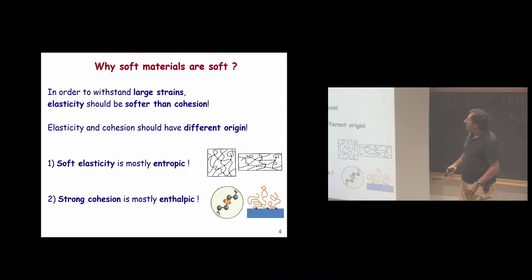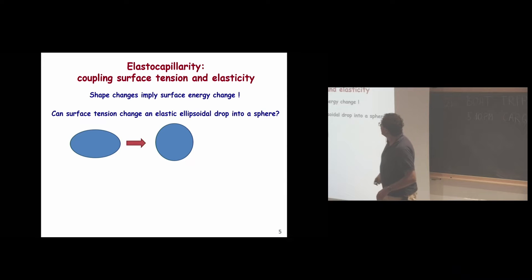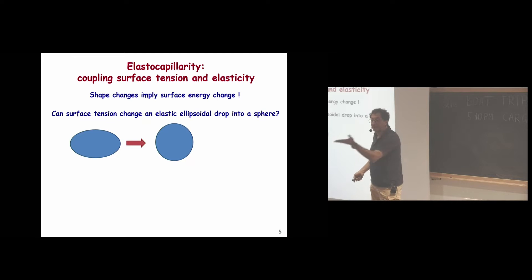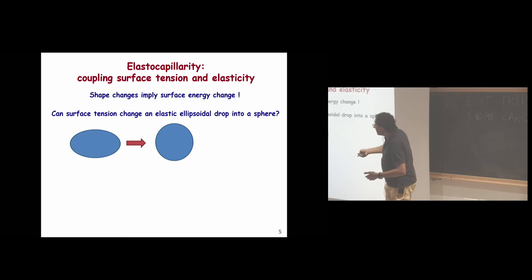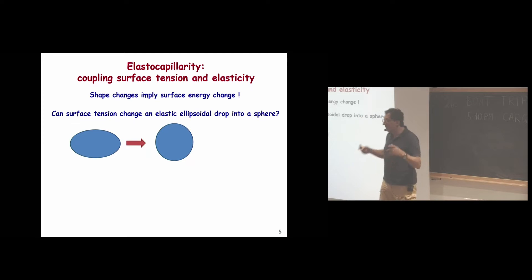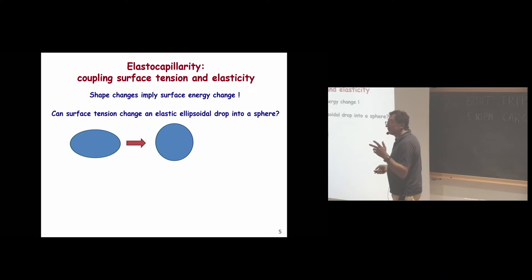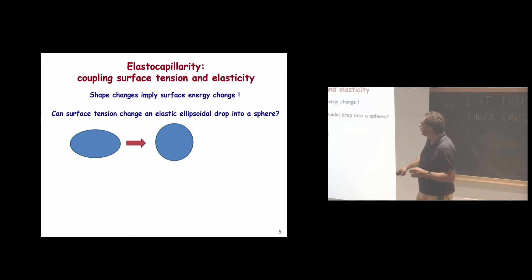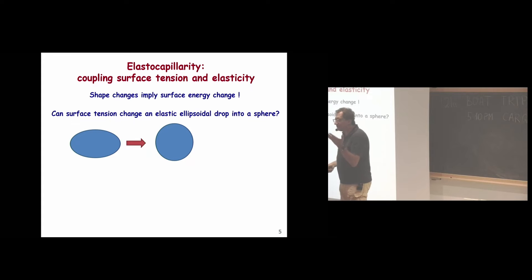Concerning elastocapillarity: we want to see how surface tension couples to a material. In stiff solids, new surfaces only appear by fracture. In soft solids, the shape can change and the surface can change too. We'll do some mind-stretching exercises — not solving exact problems, but thinking about what would happen. The arguments may not all be exact, but they help you understand what we are talking about.